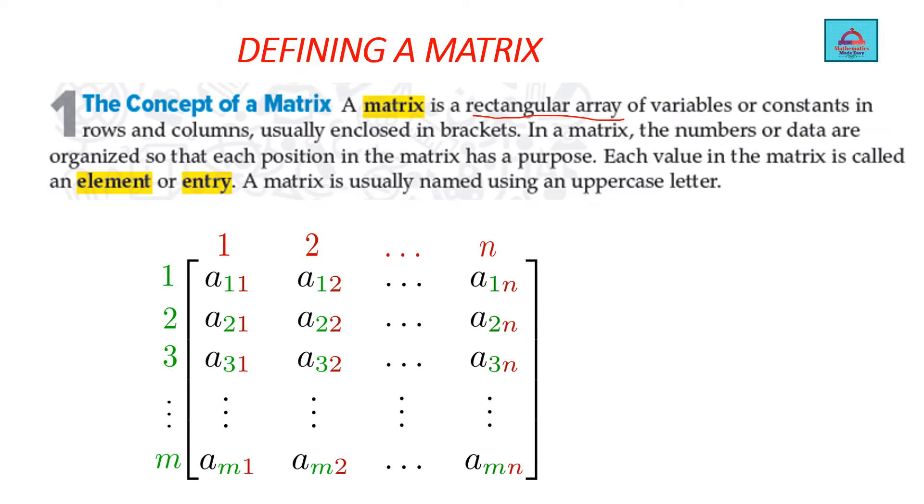Let's understand how we define a matrix. The concept of a matrix goes like this: A matrix is a rectangular array. So it is in the shape of a rectangle and it consists of variables or constants or numbers in rows and columns. I want you to recall rows are horizontal from left to right and columns are vertical, from up to down. It is organized so that each position in the matrix has a purpose.